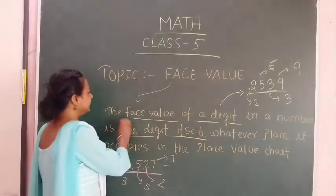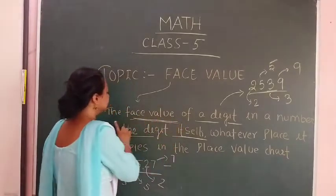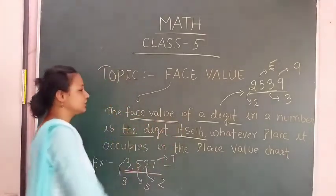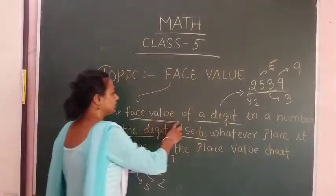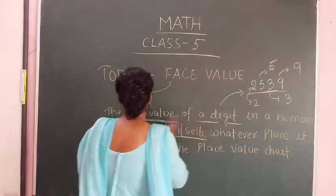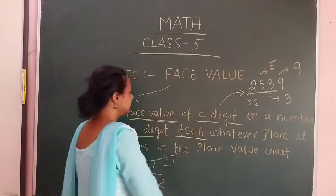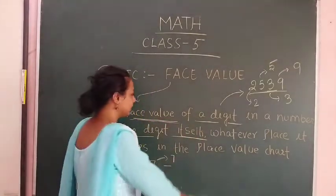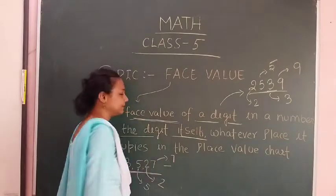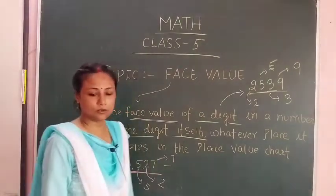Let's repeat the definition of face value. The face value of a digit in a number is the digit itself, whatever place it occupies in the place value chart.